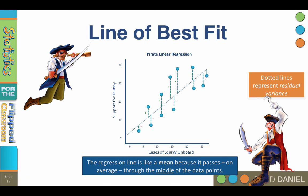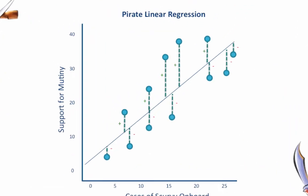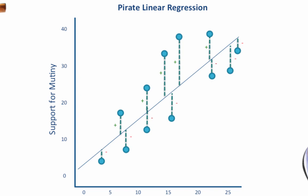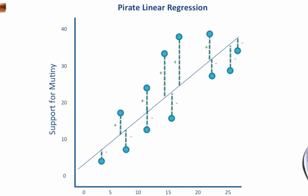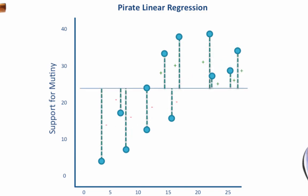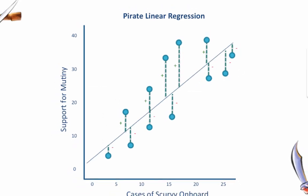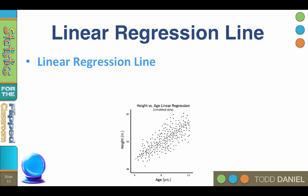Predicting with the regression line will give us better predictions than by using the mean. Look again at the amount of error with the mean, and now with the regression line. Mean, regression line. The linear regression line allows us to make better predictions because it passes through the middle of the scores.